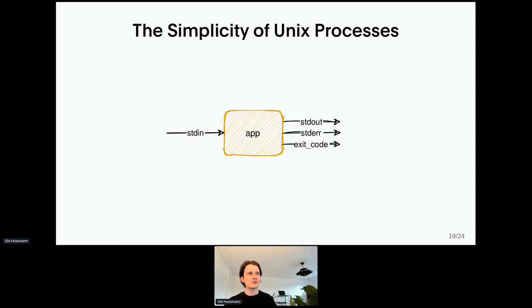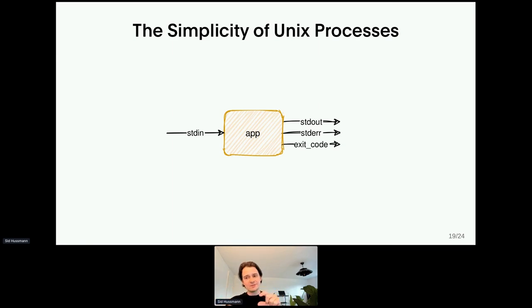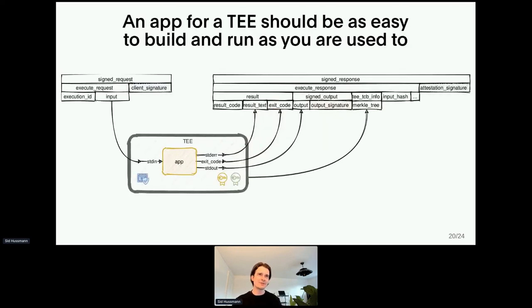Until now, we've only talked about the security architecture. I'm now going to talk about the application developer's experience. Unix has its faults; however, there is one concept that is quite beautiful: do one thing, but do it well. This, in combination with standard interfaces, made Unix so popular — it lets you chain different apps together. Write something to standard in of one process, pipe standard out to another, and so on. This is the simplicity I expect for a TEE application: I have input that needs processing, output that matters, diagnostic information, and I want to know that everything went as expected. Send it in, send it out, send the errors, and the exit code.